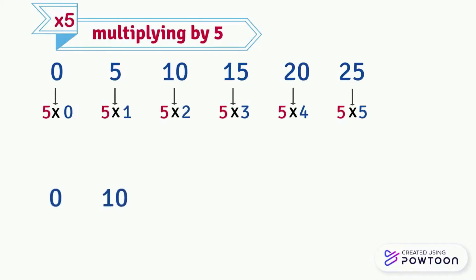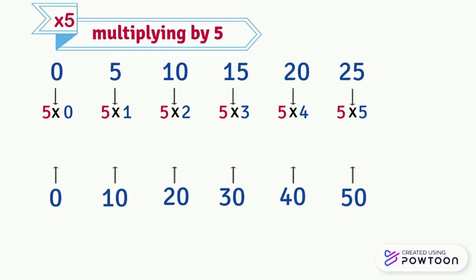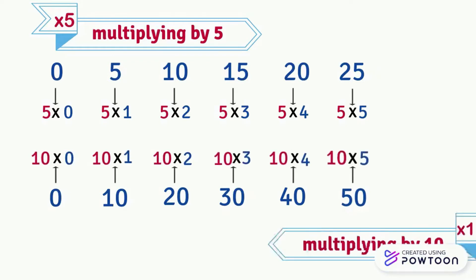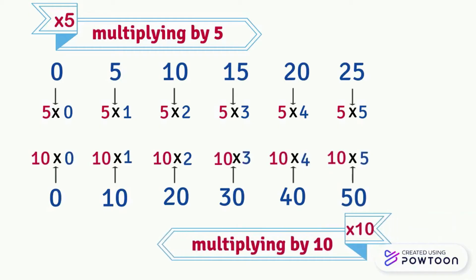We also have 0, 10, 20, 30, 40, etc. This is the pattern of 10 by 10, and again we can notice that these numbers are the results of multiplying by 10.